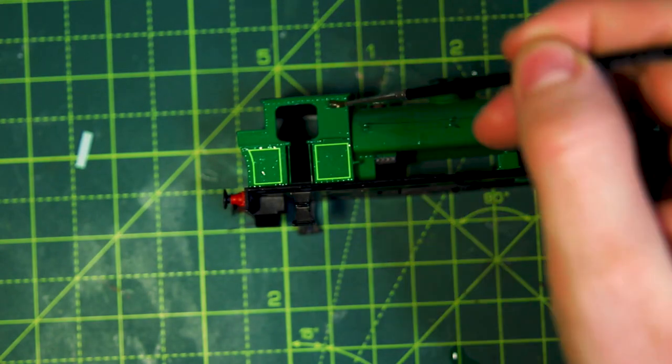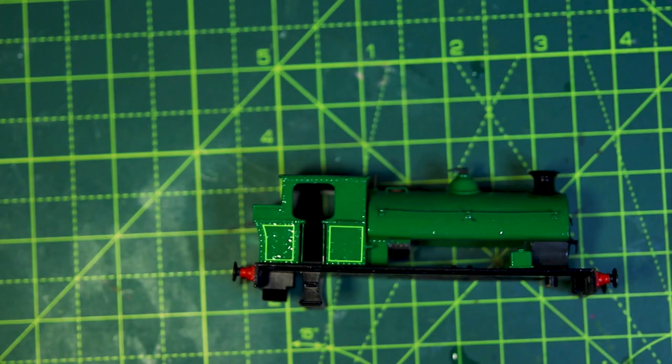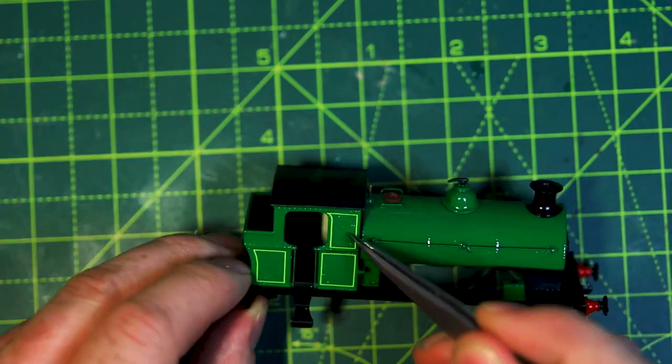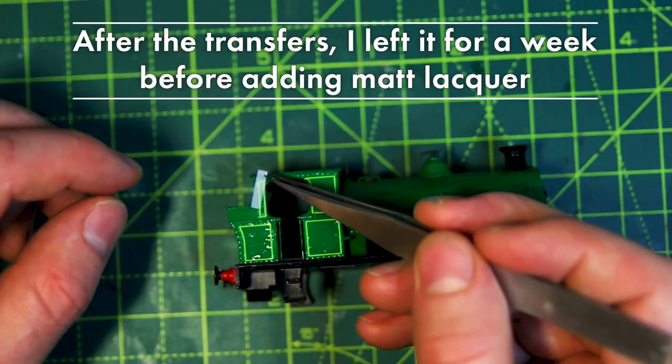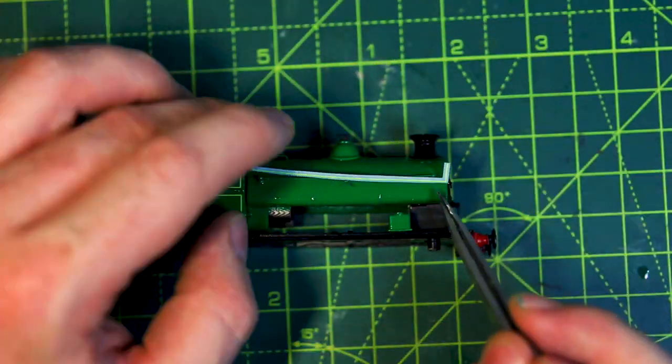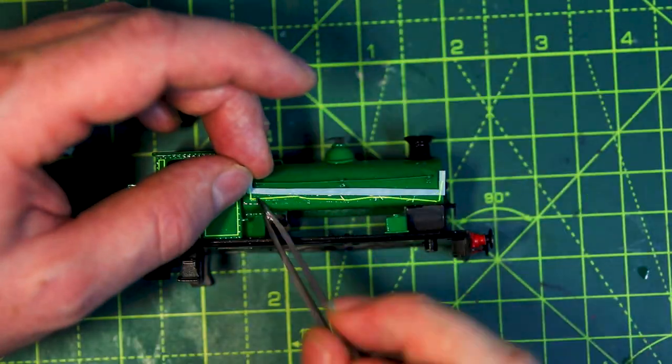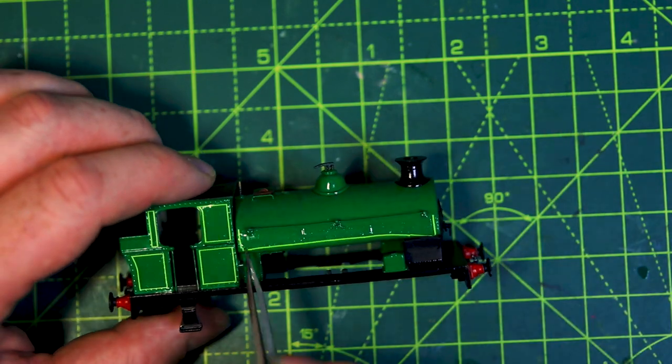Sometimes I rush things too much and try to lacquer it immediately afterwards. But this time I left it three days before sealing with clear floor polish, then another four days for that to dry before spraying a thin matte lacquer coat. And it came out okay with no wrinkling. I used Tamiya matte lacquer spray for this.